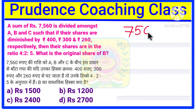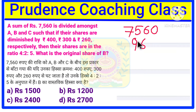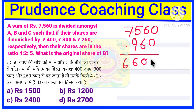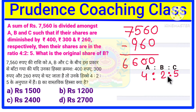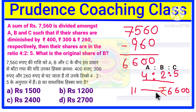According to the question, the total amount to be divided among A, B, and C is 7560 rupees. If you deduct 400 from A, 300 from B, and 260 from C — that is a total deduction of 960 rupees — then the remaining amount is 6600 rupees, which is divided among A, B, and C in the ratio 4:2:5.